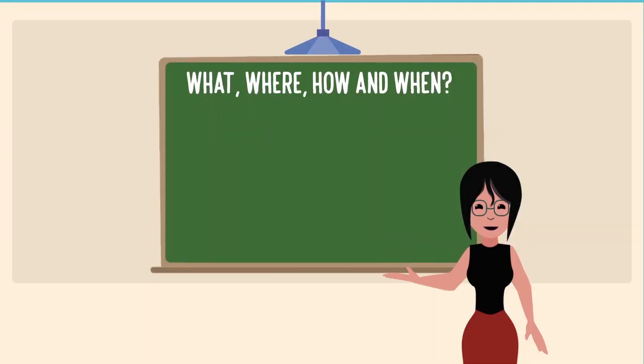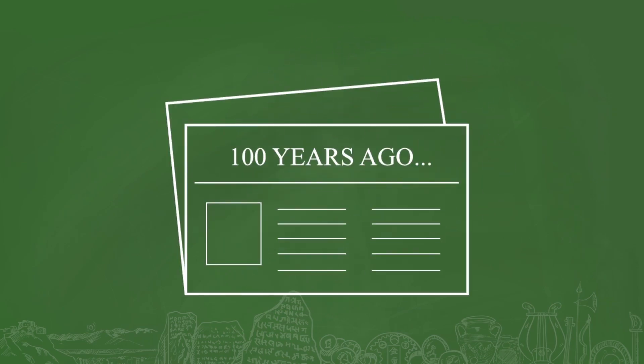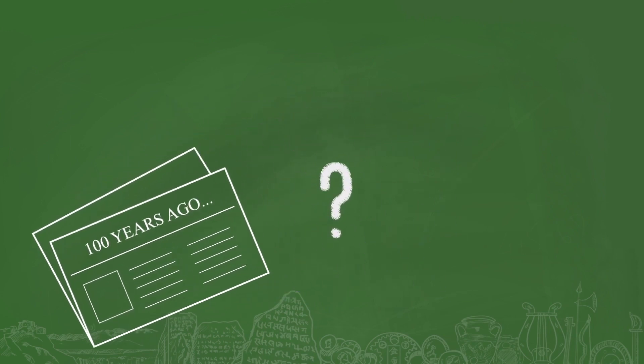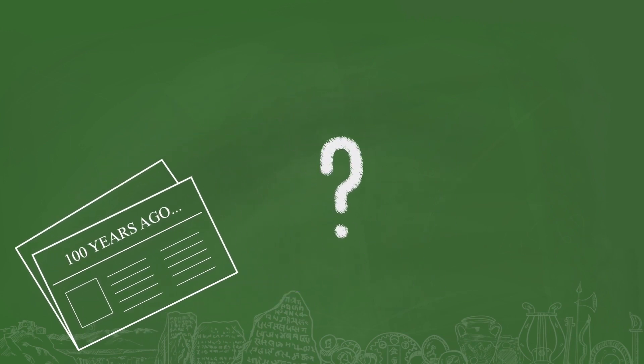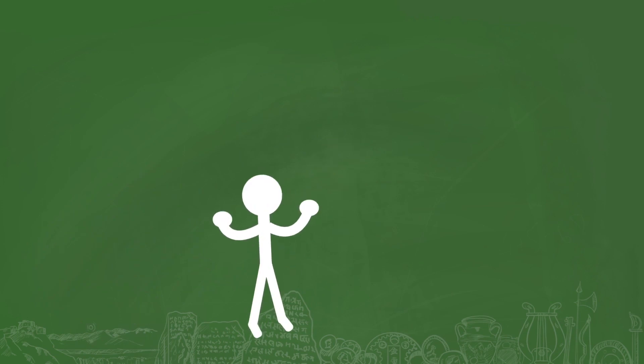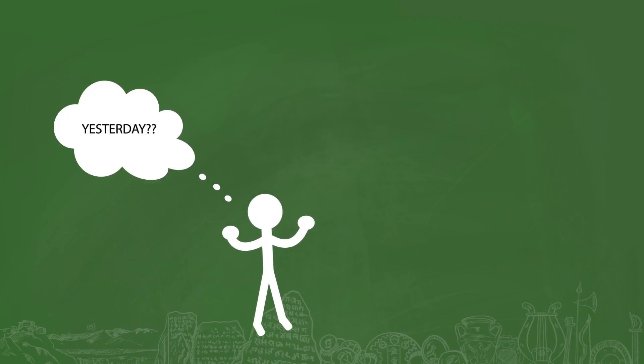Sometimes while reading the newspaper, you can see the headlines 100 years ago. Have you ever thought about how we know what happened so many years ago? If you want to know what happened yesterday, you could watch the news, or listen to the radio, or you could read a newspaper.